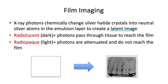Some terms to know: radiolucent refers to darkness in the image, where photons are able to pass through tissue and reach the film. Radiopaque refers to lightness in the image, where photons are attenuated or blocked and do not reach the film. These terms apply to digital imaging as well. A helpful analogy: the original film packet starts out as a blank canvas — if you scanned an empty canvas it would come out white. It's only when the photons reach the film that it becomes painted with all of those different shades of gray.